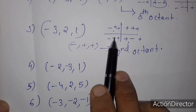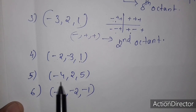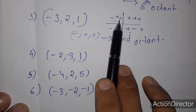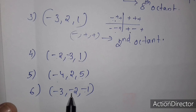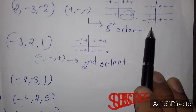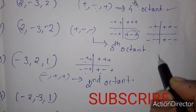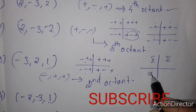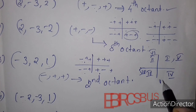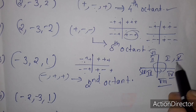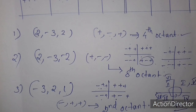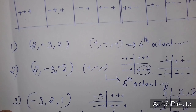Checking the sign pattern for (-2, 3, 1): signs are minus, plus, plus. Going through the octant list — 1st, 2nd, 3rd — this corresponds to the 2nd octant. Other examples give us the 3rd, 4th, 7th, 8th octants respectively, completing the set of problems.